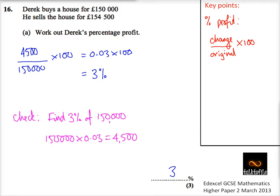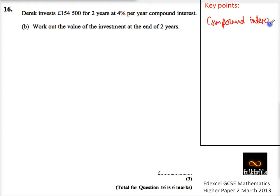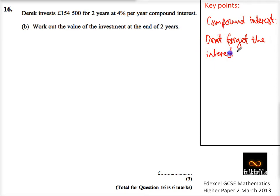Now there's a Part B. Part B says: invests the money made from selling his house for two years at 4% per year compound interest. The key point for compound interest — don't forget the interest on the interest.